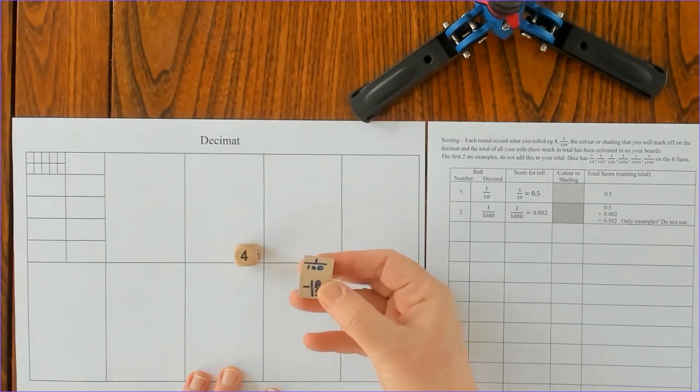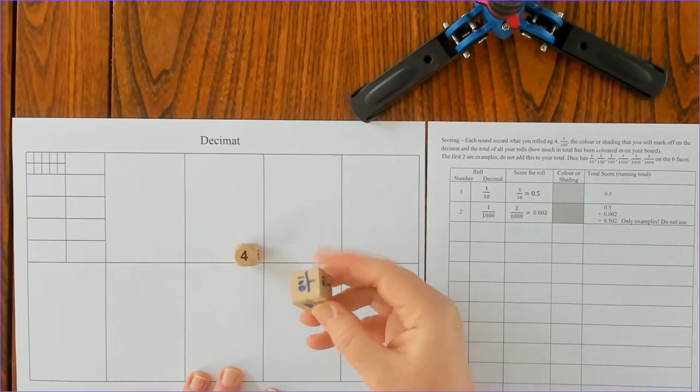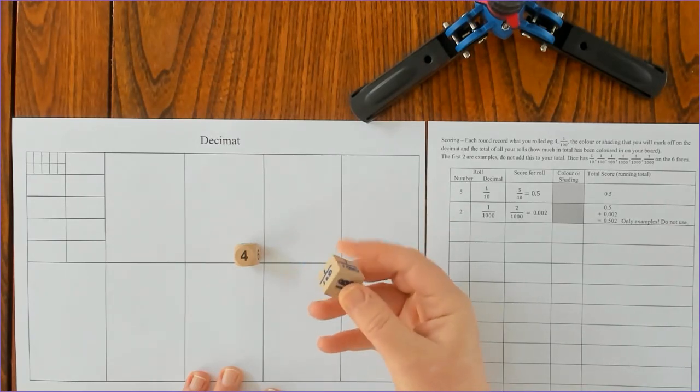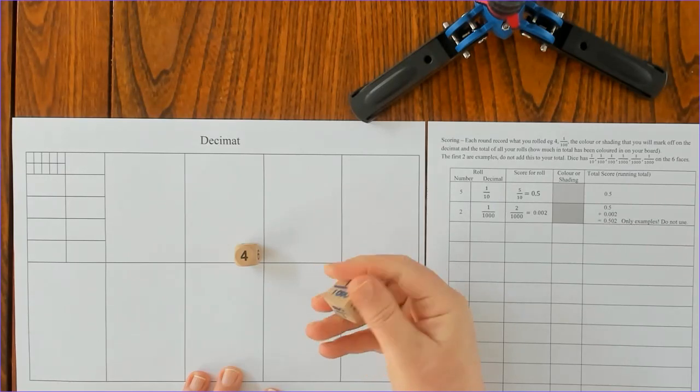This is a two centimeter wooden cube and you can see that I've got one tenth, two one hundredths, and three one thousandths on here that I've just written with some marker.